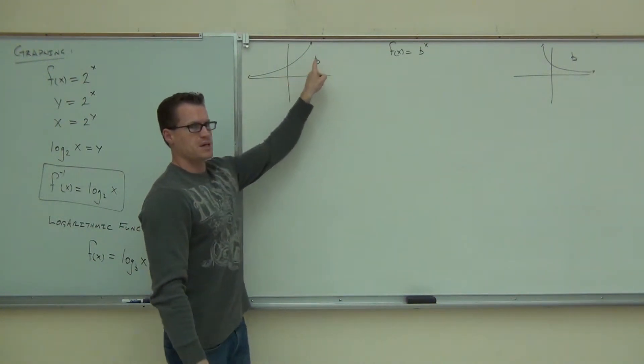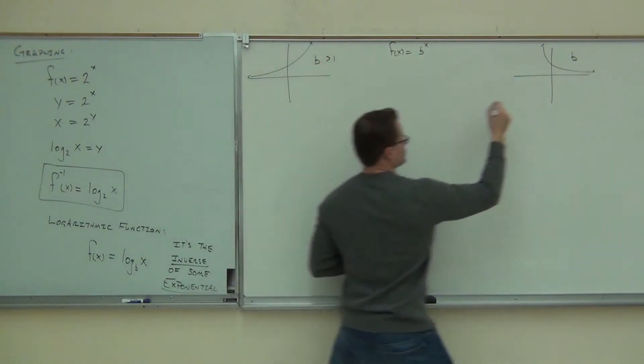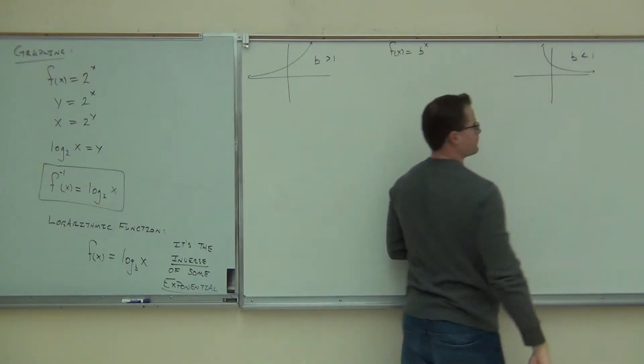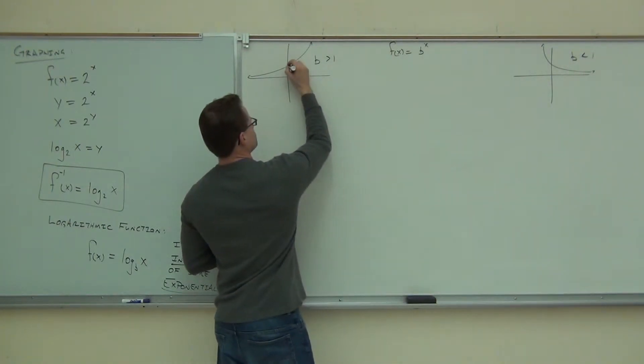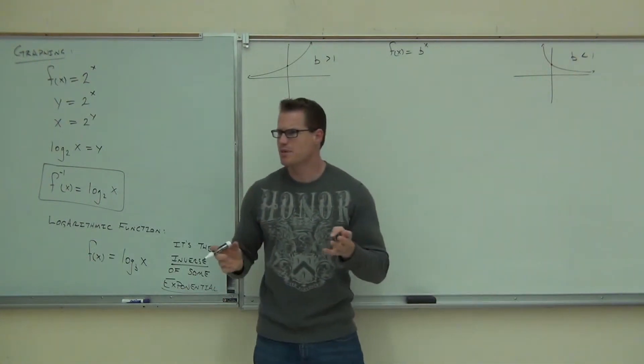What's this one? B greater than one or less than one? Greater than zero. Mm-hmm. This one, less than one. But in each case, they crossed at the same point unless you shifted them around. Do you remember talking about those shifts?